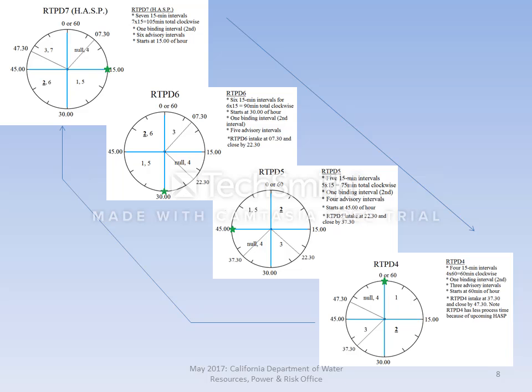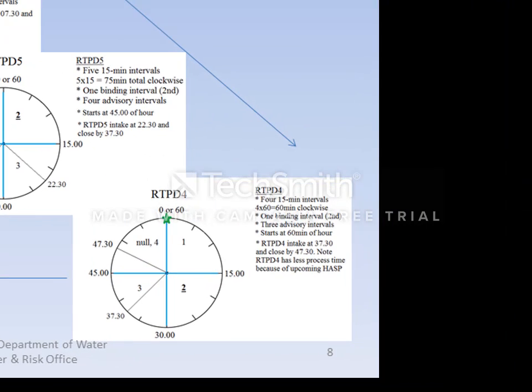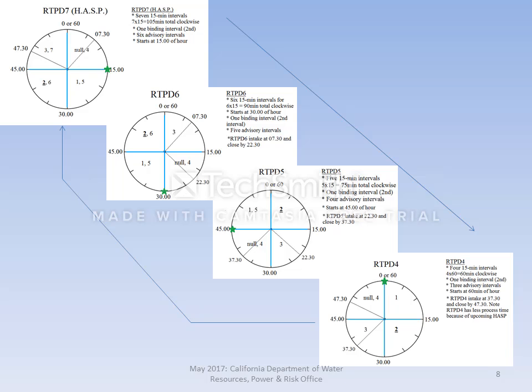PD4 samples inputs at the 37:30 mark of the hour. Note this is less available computation time due to the upcoming HASP. PD4 performs iterative computation to identify the most optimal feasible unit commitment solution, publishing four 15-minute market results no later than the 60-minute mark, made available through ADS and OASIS. PD4 produces four 15-minute intervals for 60 minutes total. Instructions commence at the 60-minute mark, and only the second 15-minute interval — between the 15 and 30-minute marks of the next hour — is binding. Intervals 3 and 4 are advisory.